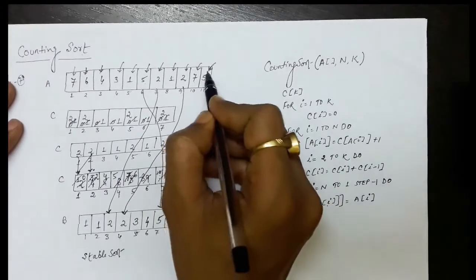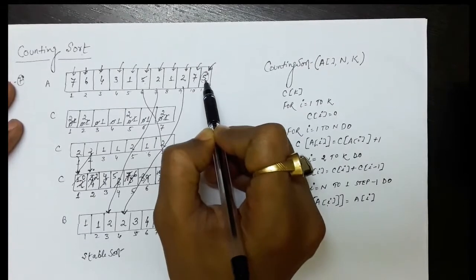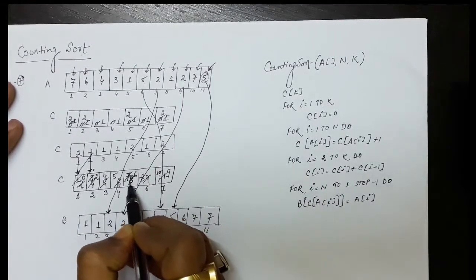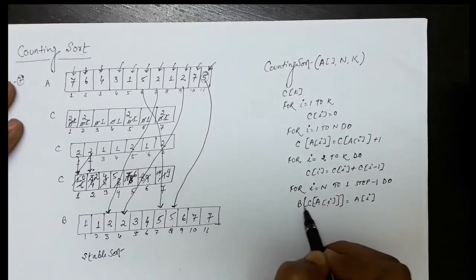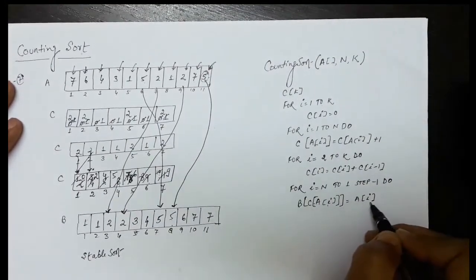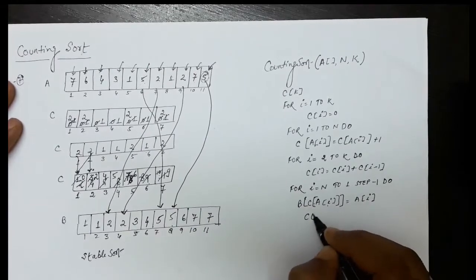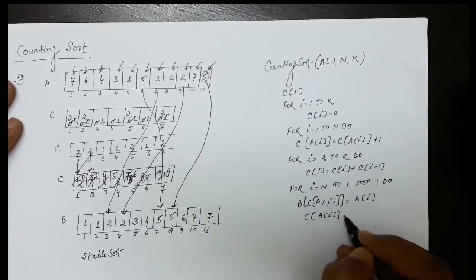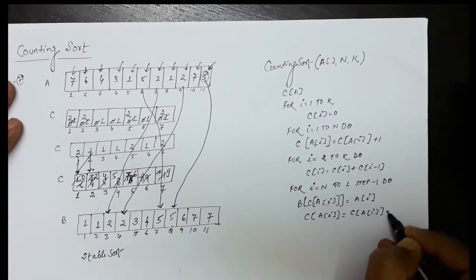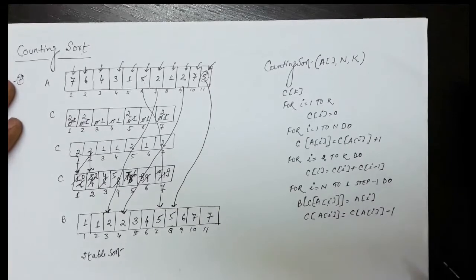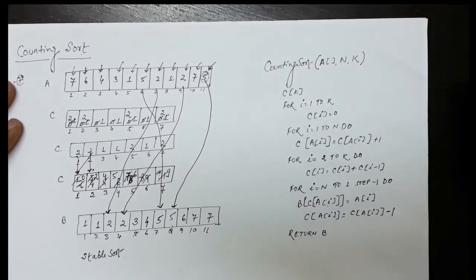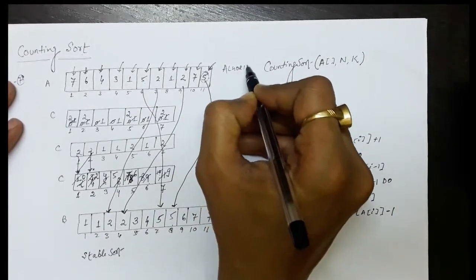The element A[i] is used as the index into C. The value C[A[i]] gives the position in the B array where we store A[i]. So B[C[A[i]]] = A[i]. After storing, we decrement C[A[i]] by 1. Finally, B contains the sorted elements, and we return array B as the answer. This is the complete algorithm for counting sort.